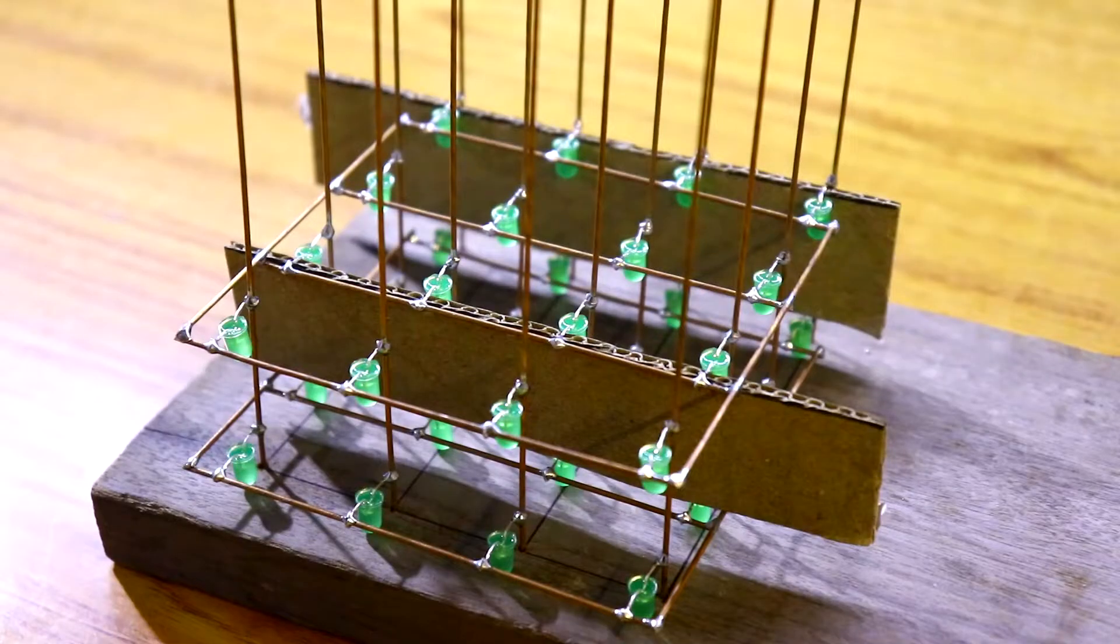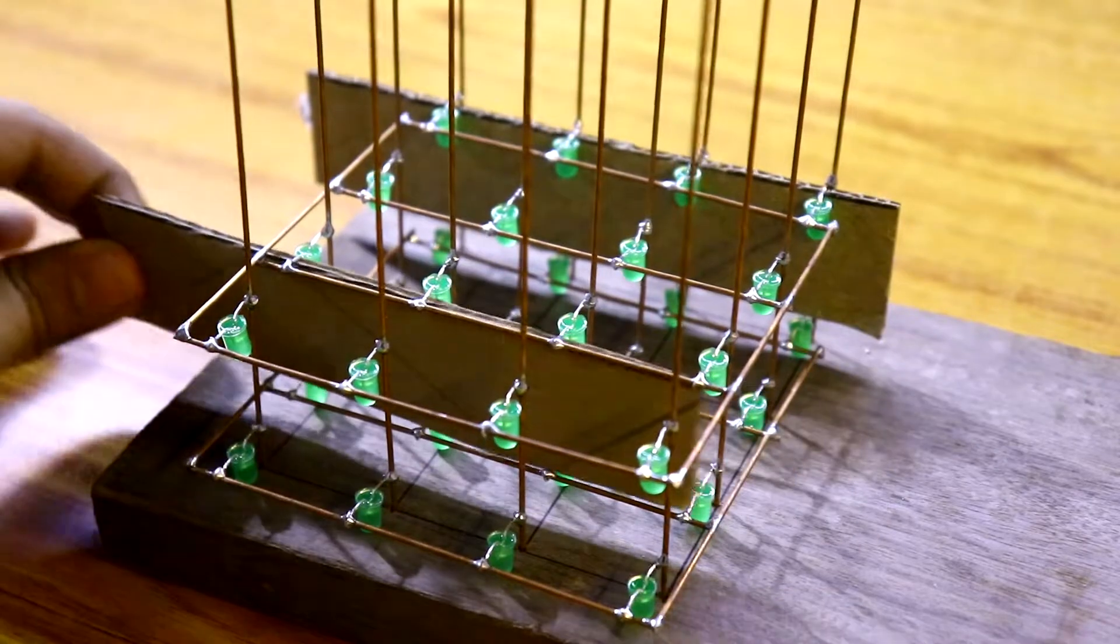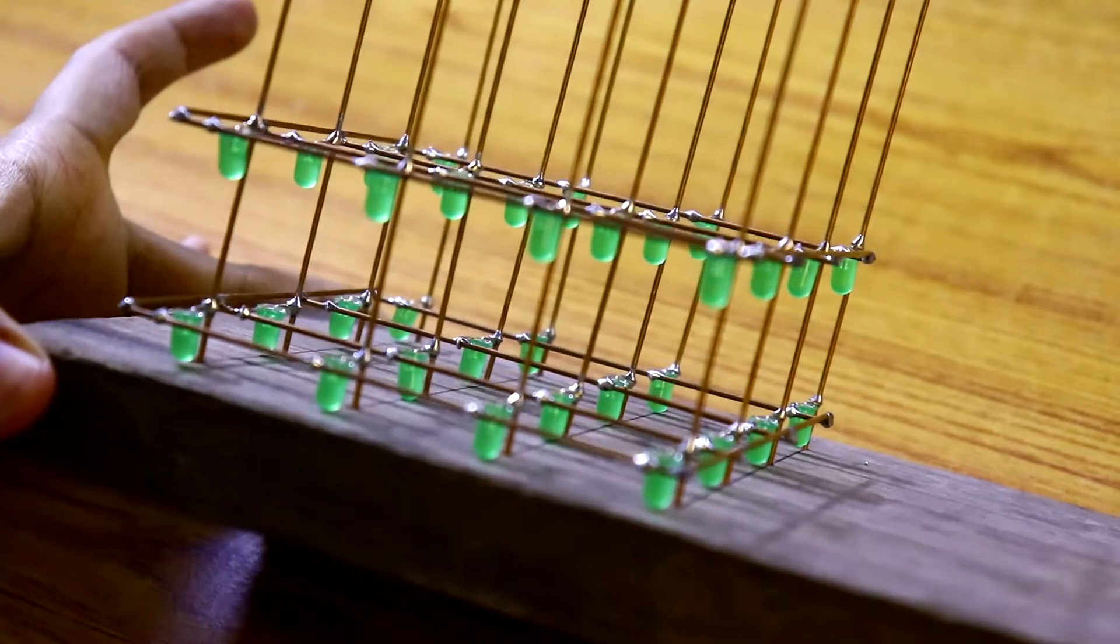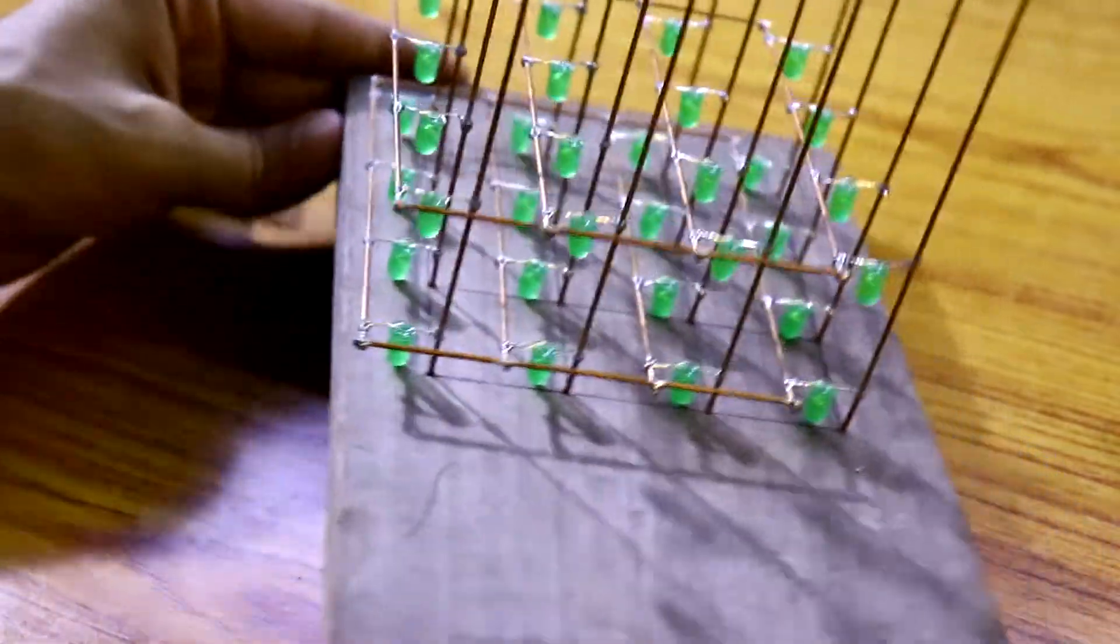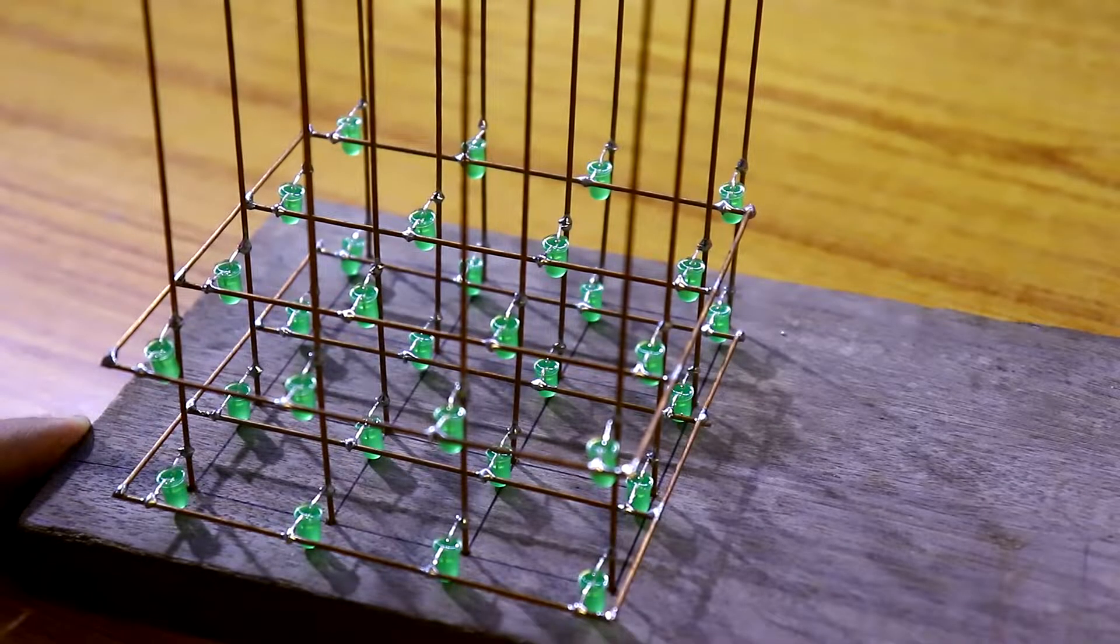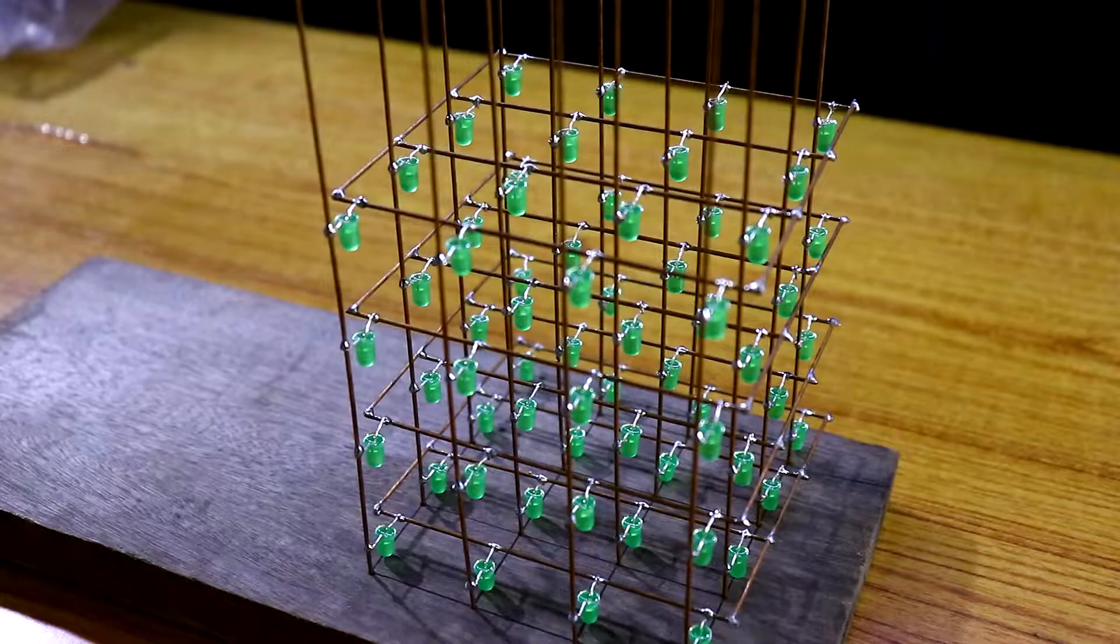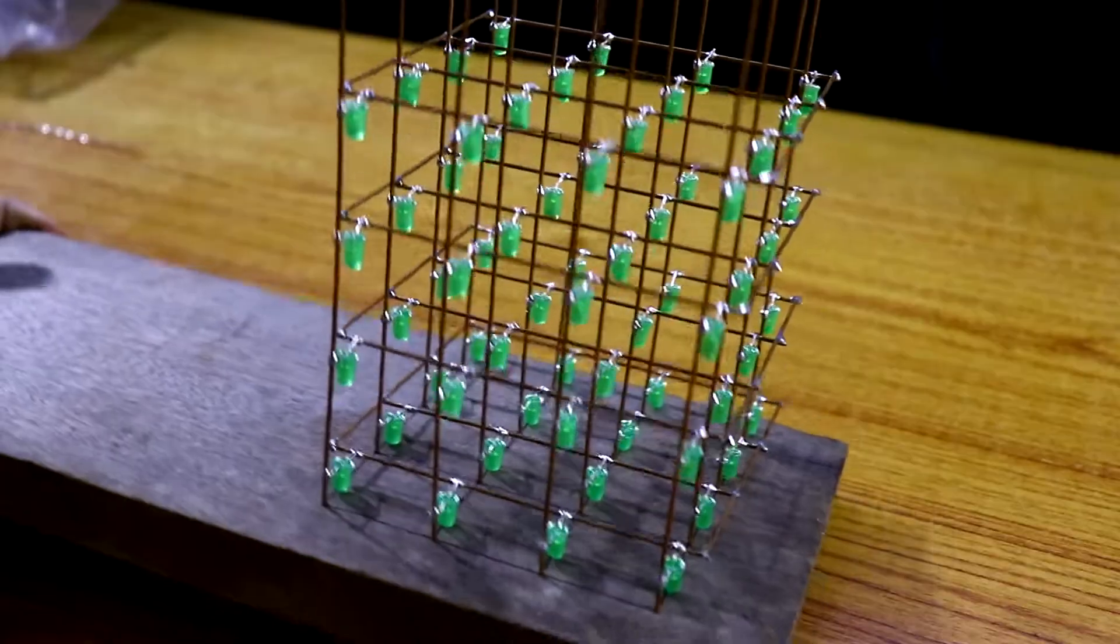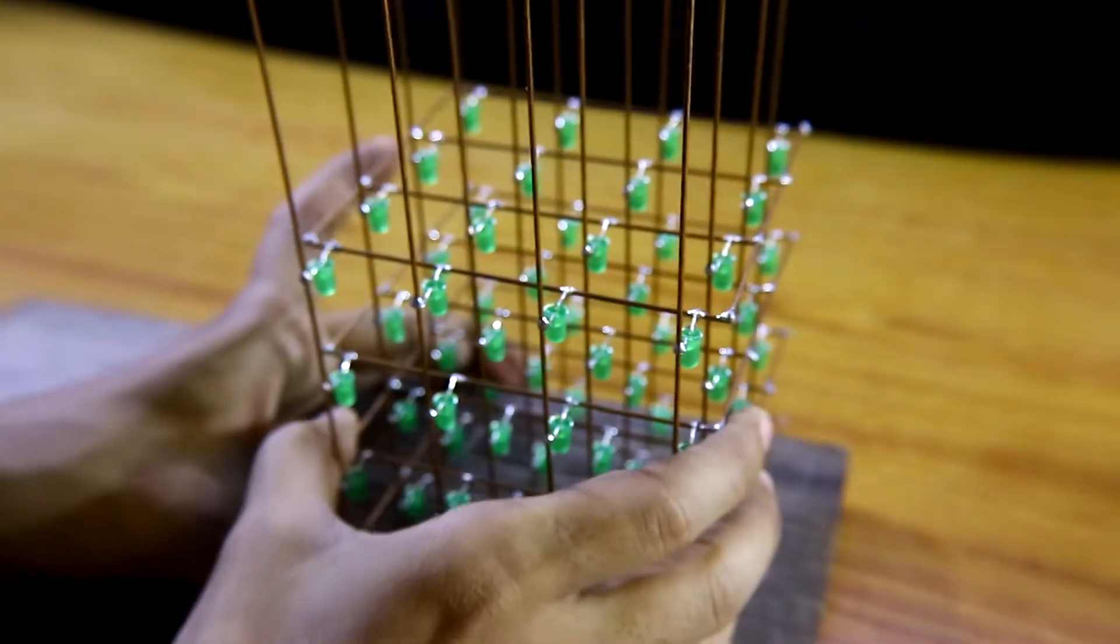Like this I have completed the layer one and layer two soldering. The gap between these two layer is three centimeter and like this we have to solder all of them. So like this I have soldered all these four layers. Now we can remove this.